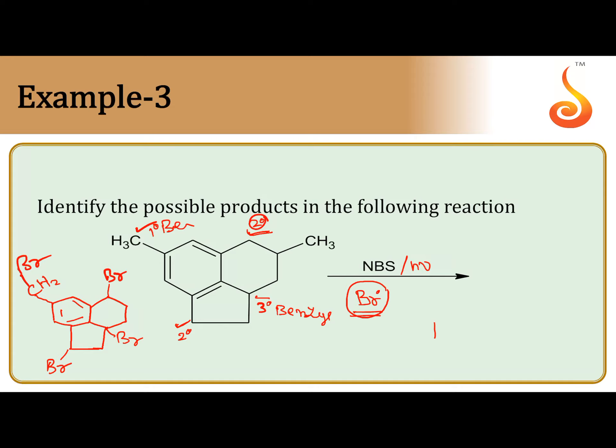Among all these 3 degree benzyl free radical is more stable. So when bromine is attached here, that will be the major product. This is the major product.